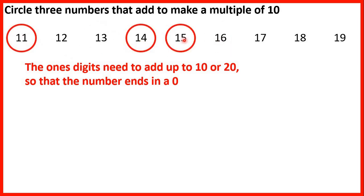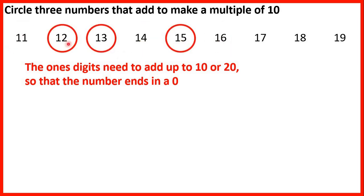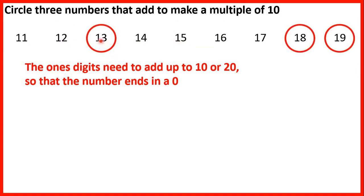We could also have 11, 14 and 15, or 12, 13 and 15. We could have 13, 18 and 19 because that gives us 50 altogether. And if we look at the ones digits, 3 plus 8 plus 9 is 20, so our number will end in a 0.